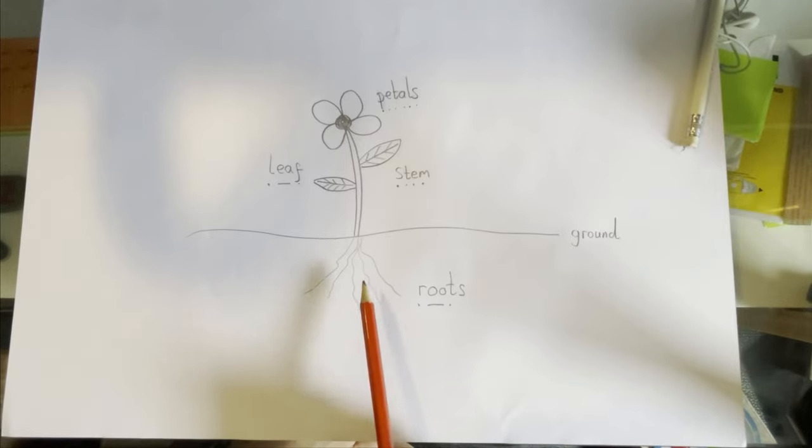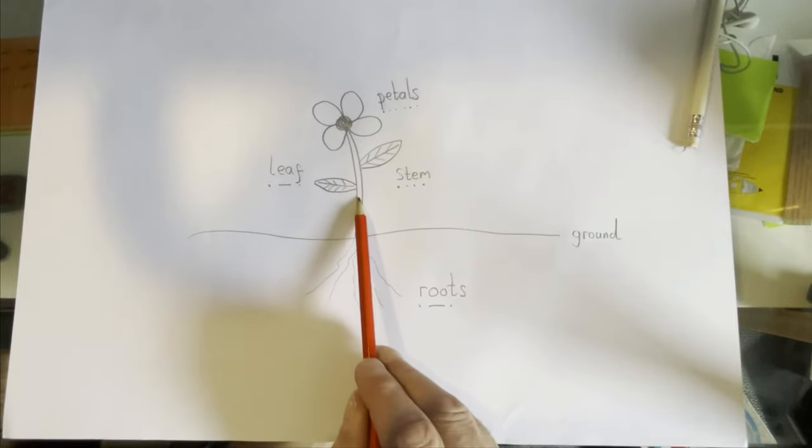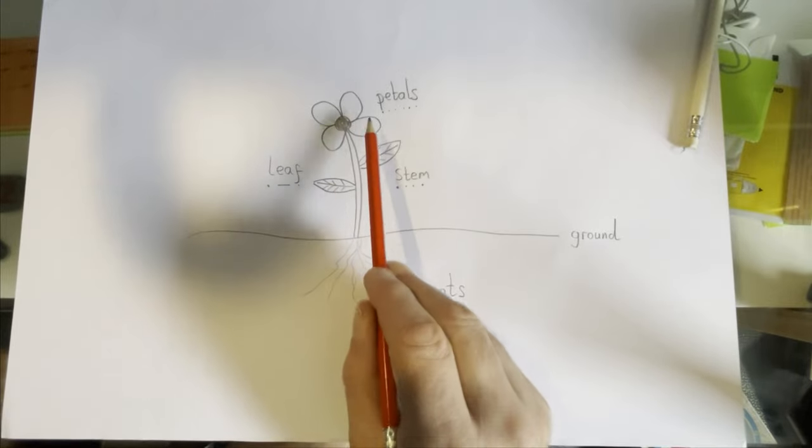There we go. So we have the roots, the stem, the leaves, and the petals.